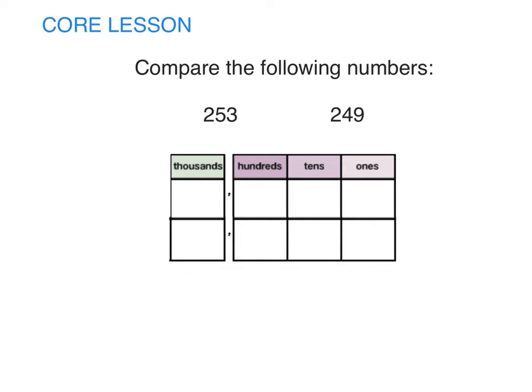In 253, there are two hundreds, five tens, and three ones. In 249, there are two hundreds, four tens, and nine ones.